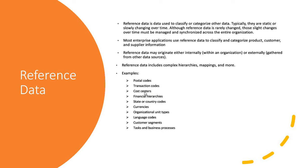Reference data is data used to classify or categorize other data. It is known by many other terms like drop-down values, list of values, code-value pairs, etc. Reference data is static or very slowly changing in nature. Although it is rarely changed, those changes need to be propagated to downstream systems either in real-time or in batch mode and synchronized across the entire organization.